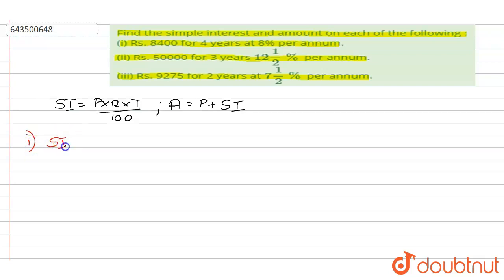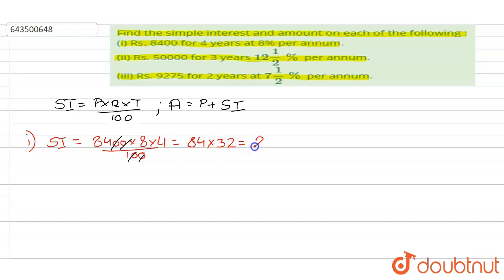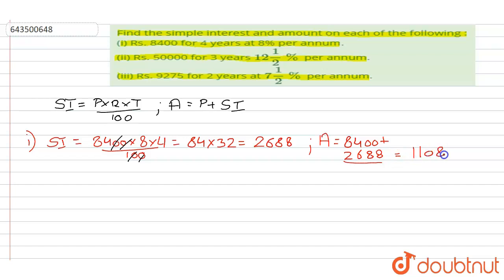In the first part, principal is 8400, rate of interest is 8%, and time is 4 years, divided by hundred. Canceling out the zeros, this equals 84 multiplied by 32, which equals 2688. The amount is principal 8400 plus simple interest 2688, which equals eleven thousand and eighty-eight.